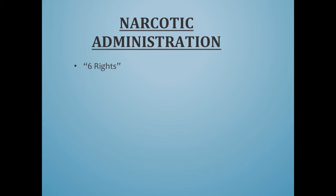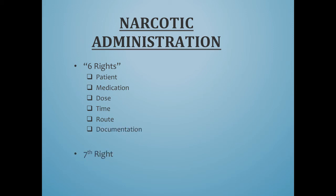Speaking of your six rights, let's review them: the right patient, the right medication, the right dose, the right time, the right route, the right documentation. We also have the seventh right, which is the right to refuse treatment. Any time you give a narcotic, you should document in your report whether the administration was from implied or informed consent. We should know whether the patient was alert and oriented and you gave them the rundown of what you're giving them, so they have the right to refuse if they choose to. If they're not alert, then we take that as implied consent to give that medication.